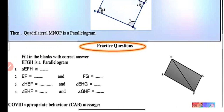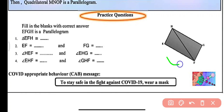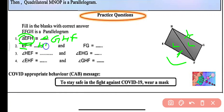Now we have a practice question. We are given a parallelogram EFGH, and in this parallelogram triangle EFH is congruent to triangle GHF. So EF will be equal to side HG, and angle HEF will be equal to angle HGF.